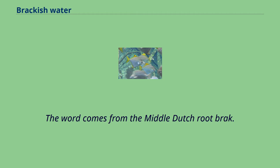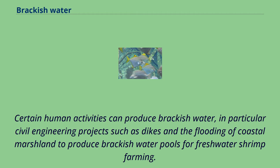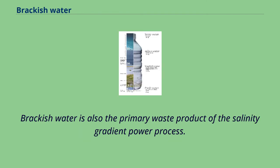The word comes from the Middle Dutch root brack. Certain human activities can produce brackish water, in particular civil engineering projects such as dikes and the flooding of coastal marshland to produce brackish water pools for freshwater shrimp farming. Brackish water is also the primary waste product of the salinity gradient power process.